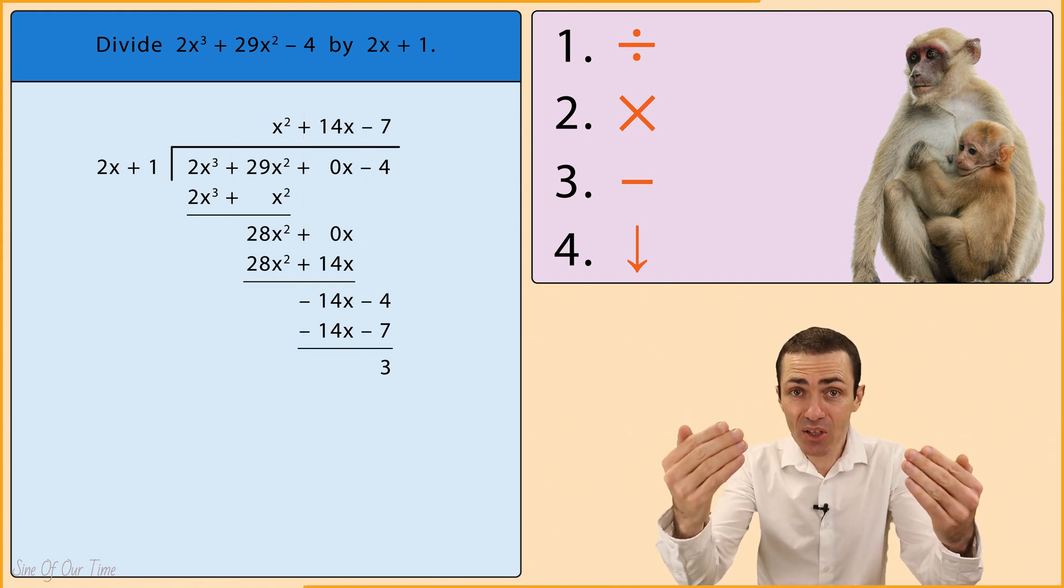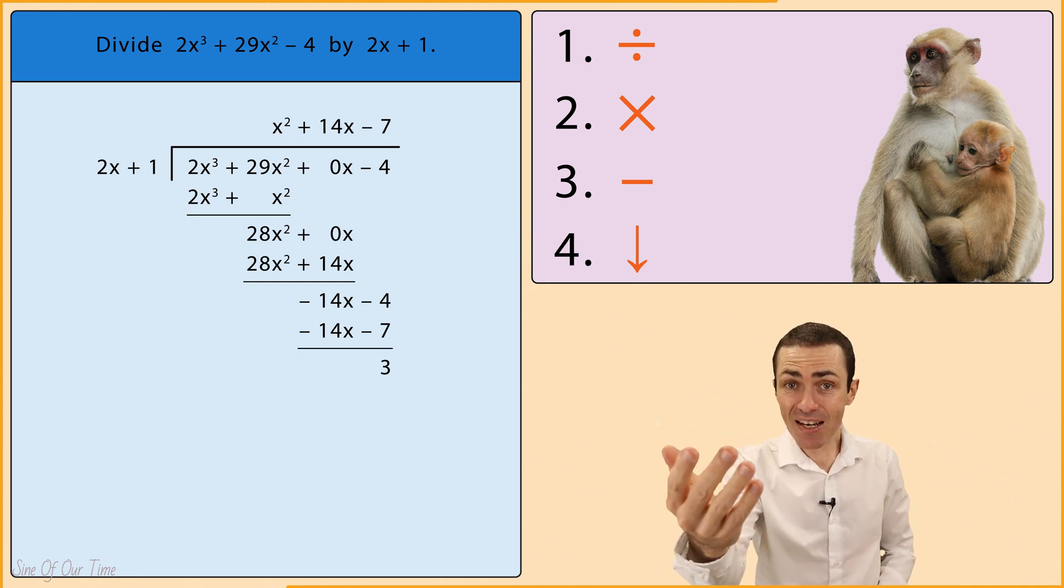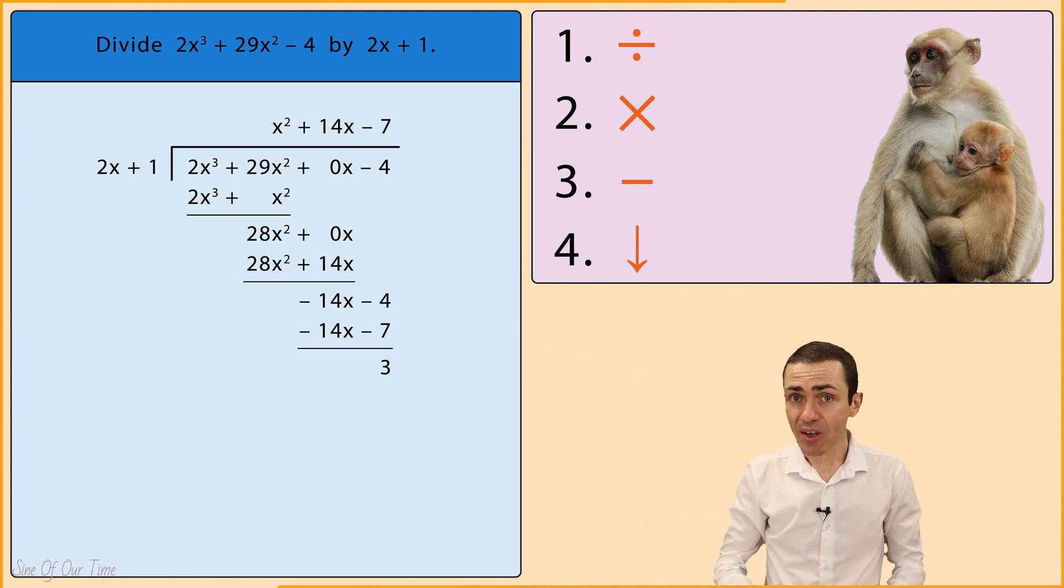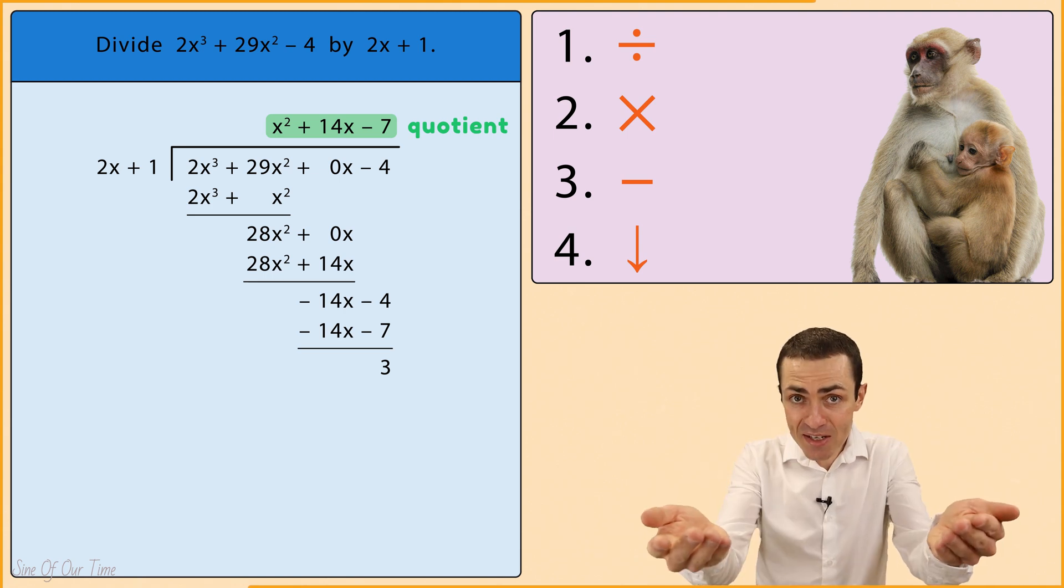The result of the division is x squared plus 14x minus 7, which we refer to as the quotient, while the 3 at the bottom of our calculations is referred to as the remainder.